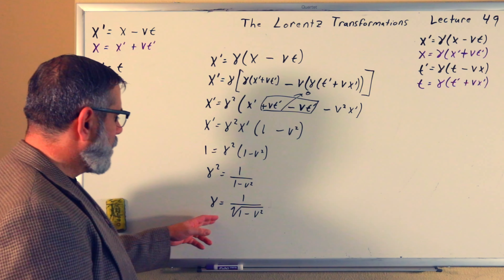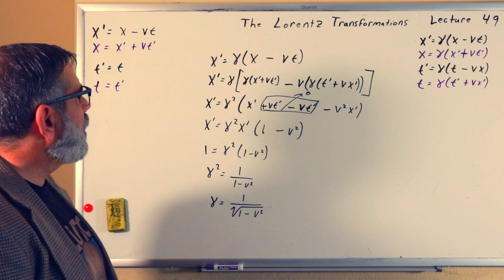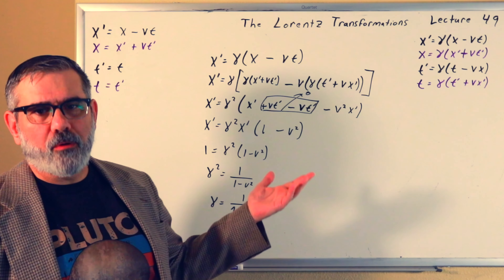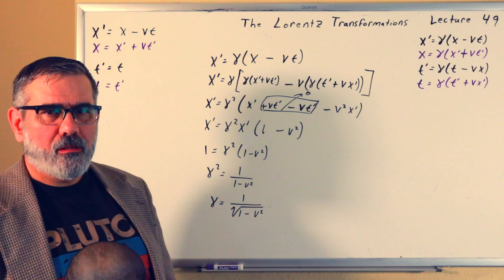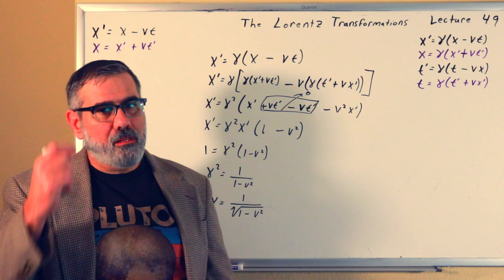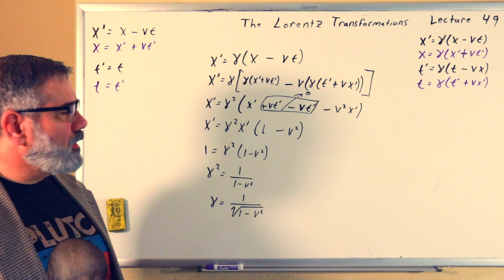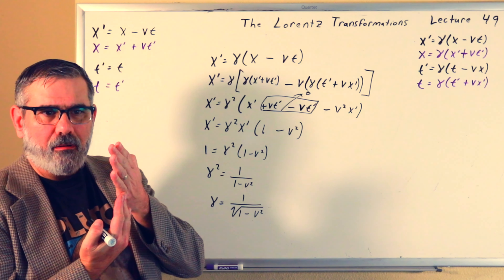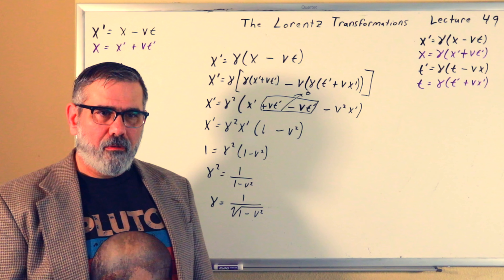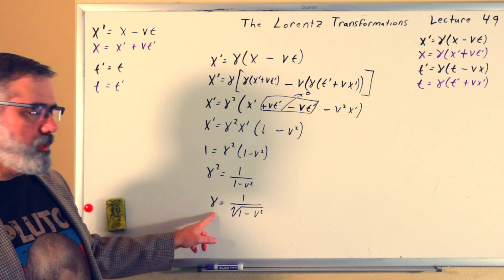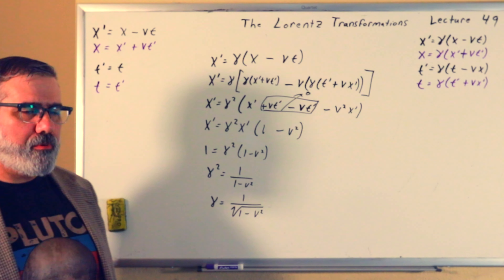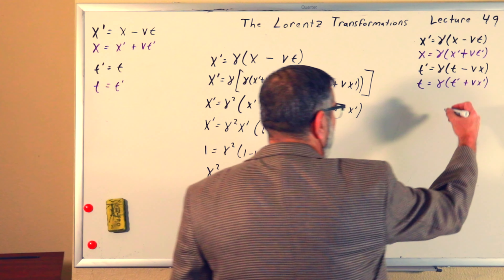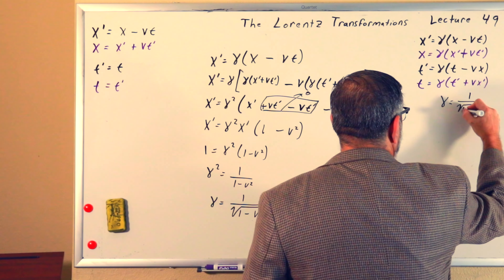There's a question about whether to keep the positive or negative root. Setting t equals zero in x prime equals gamma(x minus vt) gives x prime equals gamma times x. If velocity is also zero, we need x prime to equal x — they should be lined up. So gamma equals plus 1, not minus 1. We use the positive root. So gamma equals 1 over the square root of (1 minus v squared).